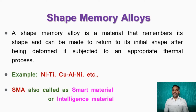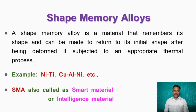Good morning. In this class I would like to explain about shape memory alloys. A shape memory alloy is a material that remembers its shape and can be made to return to its initial shape after being deformed if subjected to an appropriate thermal process. Thermal process means heating or cooling. Examples of shape memory alloys include nickel, titanium, copper, aluminum, nickel, etc.